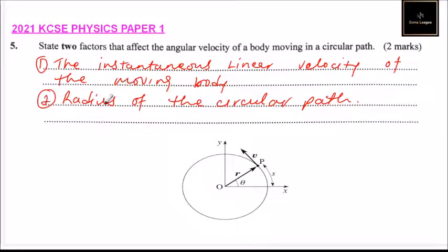So those are the two factors that affect the angular velocity of the body moving in a circular path. So the instantaneous velocity, it keeps on changing. So when it gets to that point, now the instantaneous velocity will be in that direction and so on as it moves along the circular path. So that's how you answer that and you'll be able to get two marks.